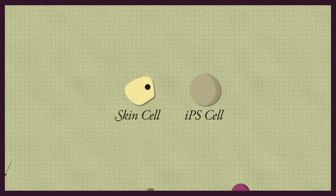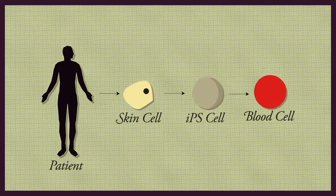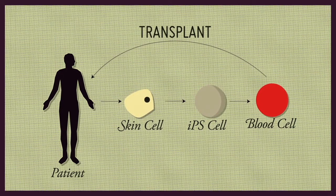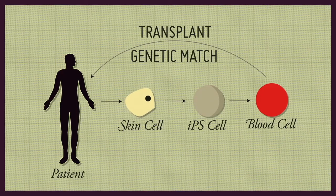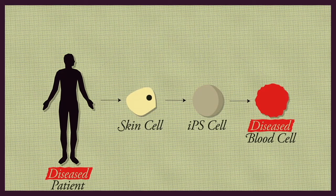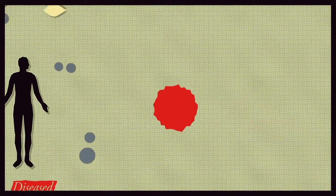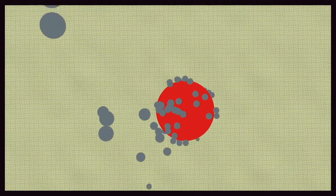The creation of IPS cells from individual patients may one day allow us to develop replacement tissues that are a perfect genetic match to the patient. In addition, the creation of IPS cells from patients with specific diseases will allow scientists to develop new drugs to treat a wide variety of disorders.